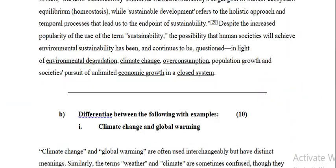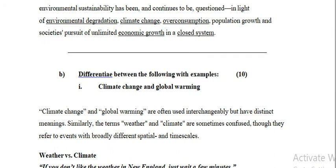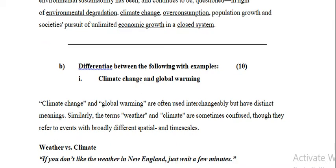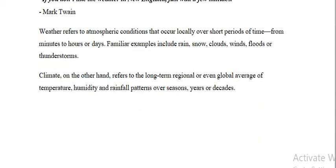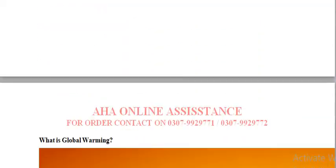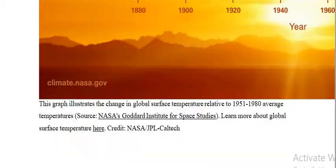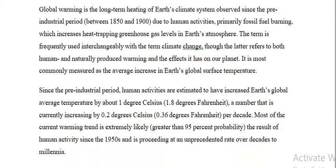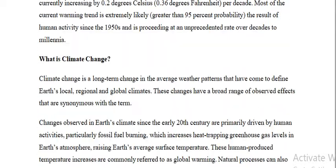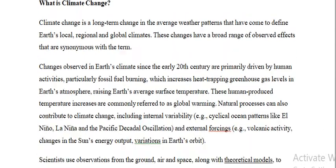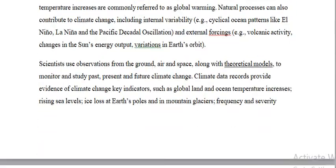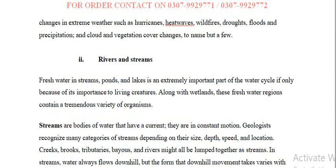Part B: Differentiate between the following with examples — climate change and global warming. Climate change and global warming are most important topics. Global warming: we will define what impacts climate change has.